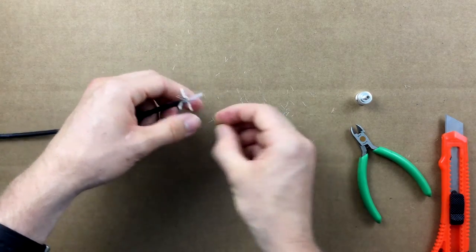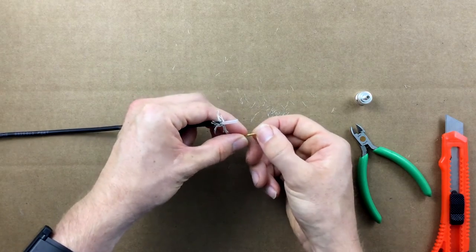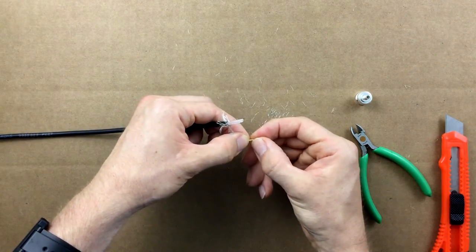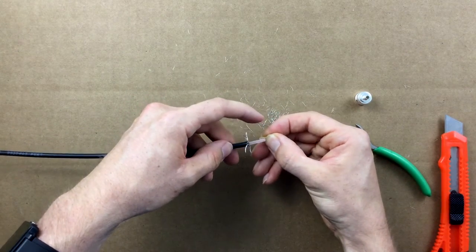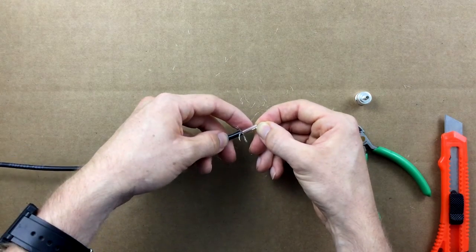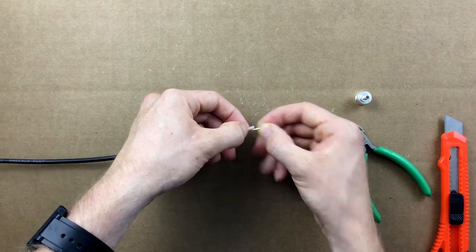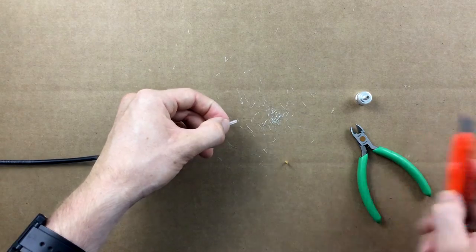Grab the center pin of the connector again and line up the base of the pointed end with the end of the coax. Place a mark or use your thumbnail to mark just below the bottom of the center pin, or three-sixteenths of an inch from the end, to show where to cut through the dielectric.